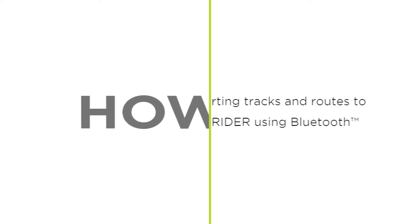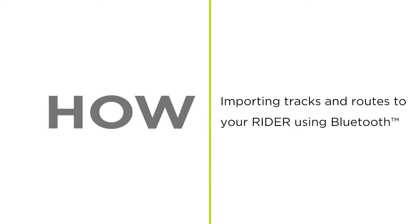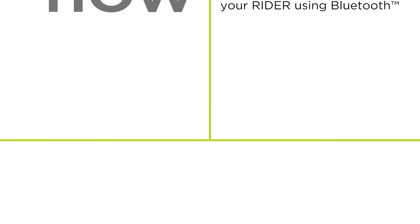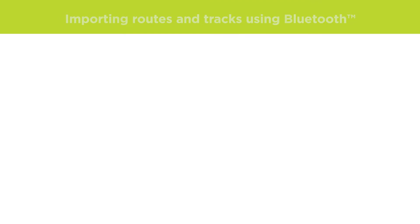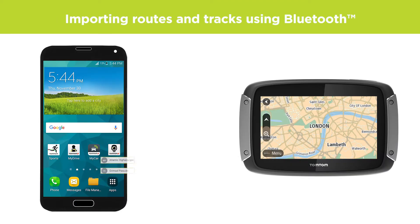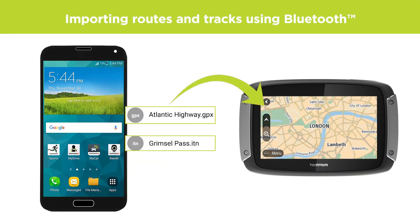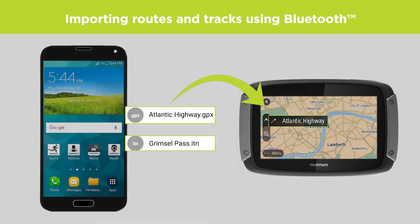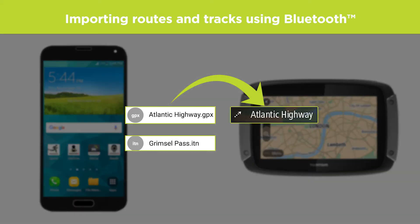Importing Tracks and Routes to Your Rider Using Bluetooth. You can import two types of files from a Bluetooth-enabled device to your rider: GPX files, which become tracks after you import them, and ITN files, which become routes.